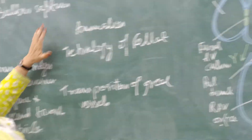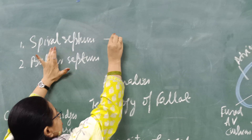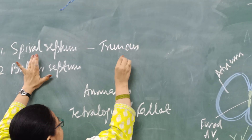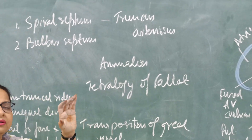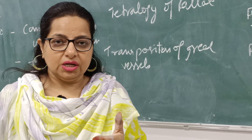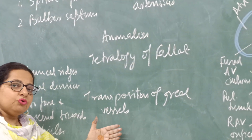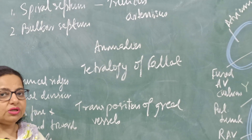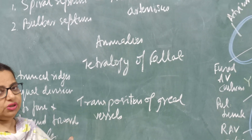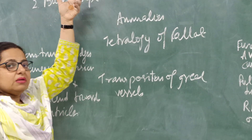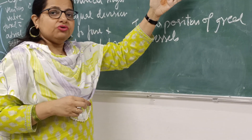Initially, the spiral septum appears in the truncus arteriosus, forming a partition between the pulmonary trunk and aorta in such a manner that lower down the pulmonary trunk is ventral to the aorta, but as you go up it comes to lie on the left side of the aorta. That is how the spiral septum causes the partitioning of the truncus arteriosus and formation of the pulmonary trunk and aorta.